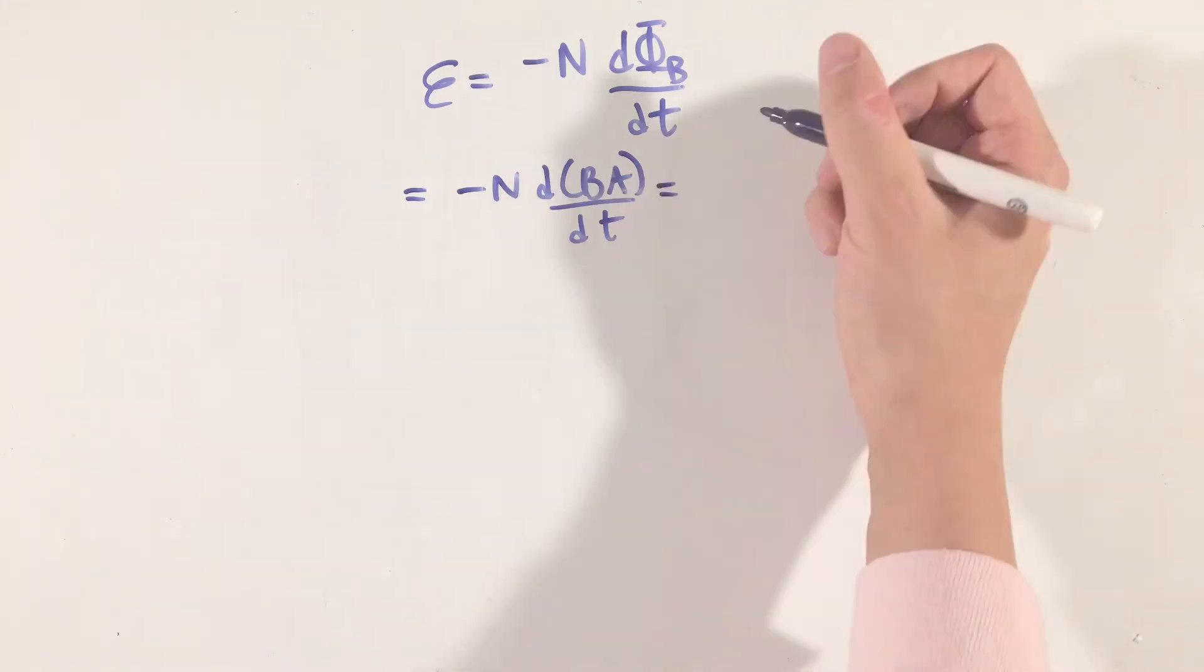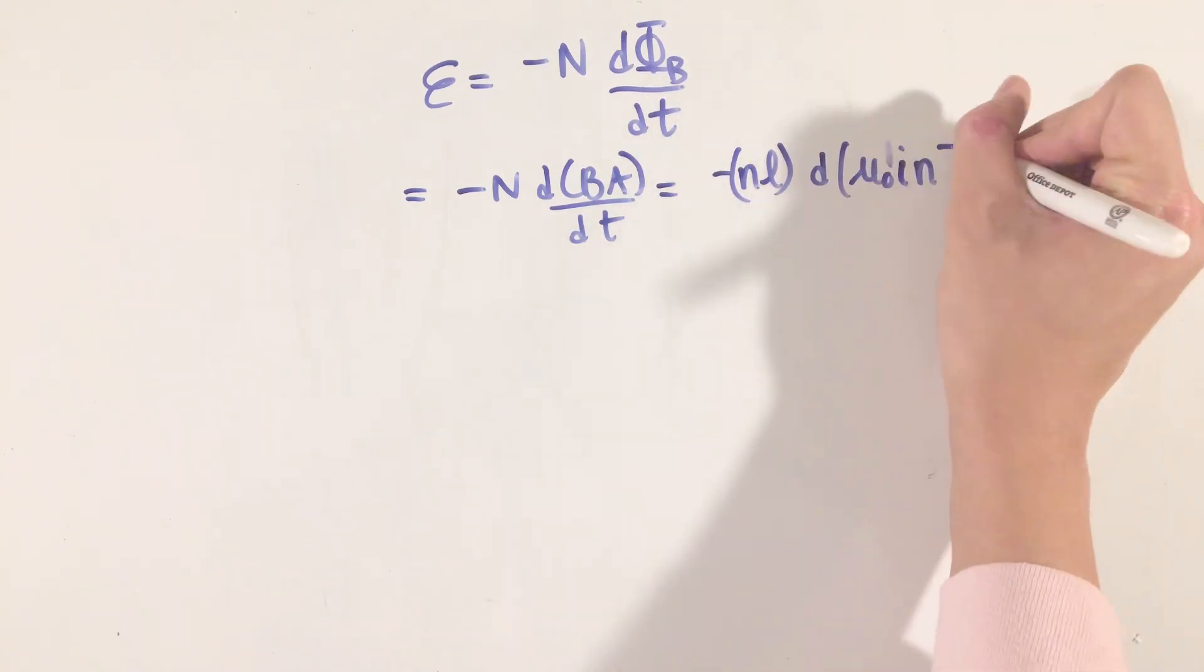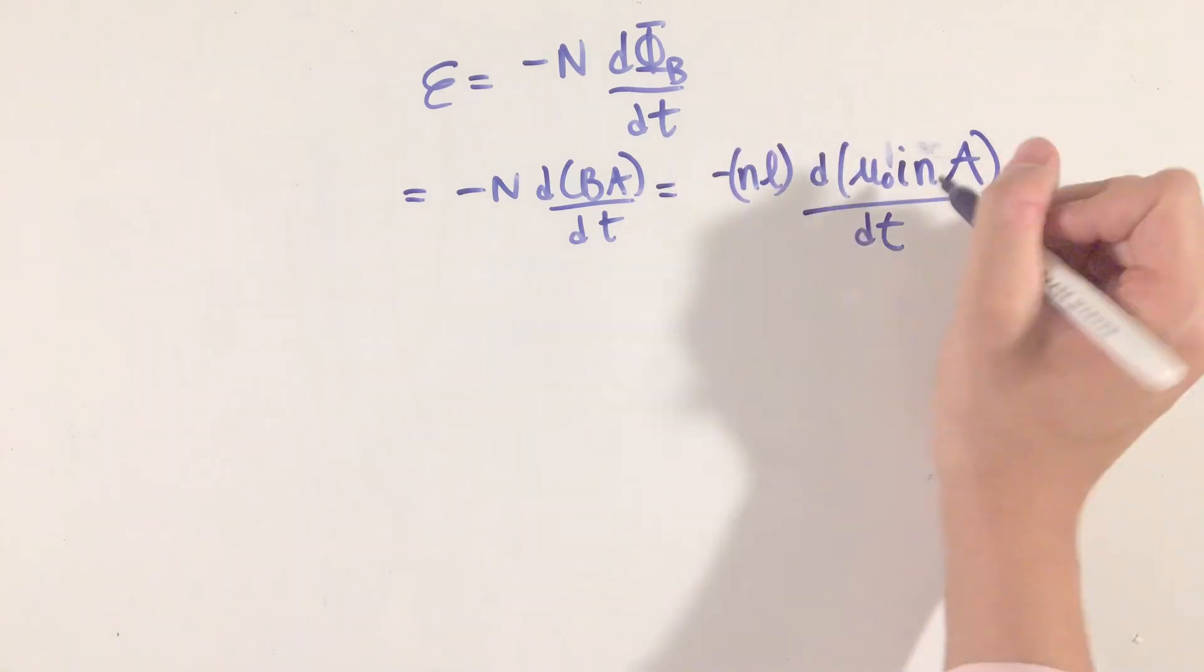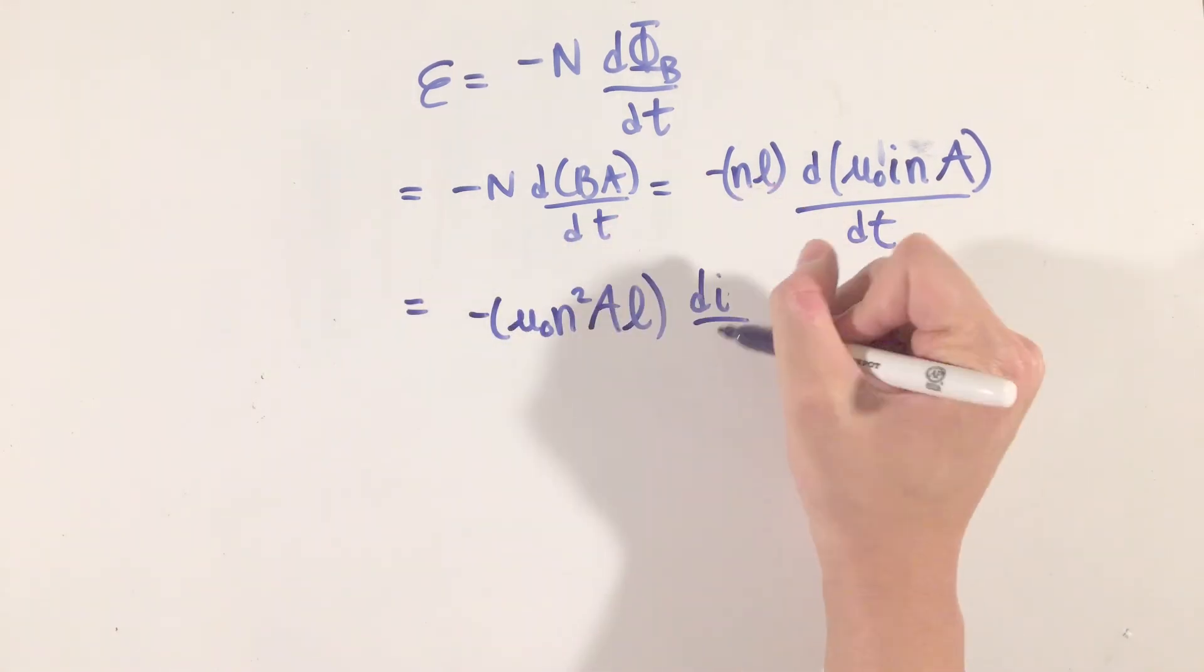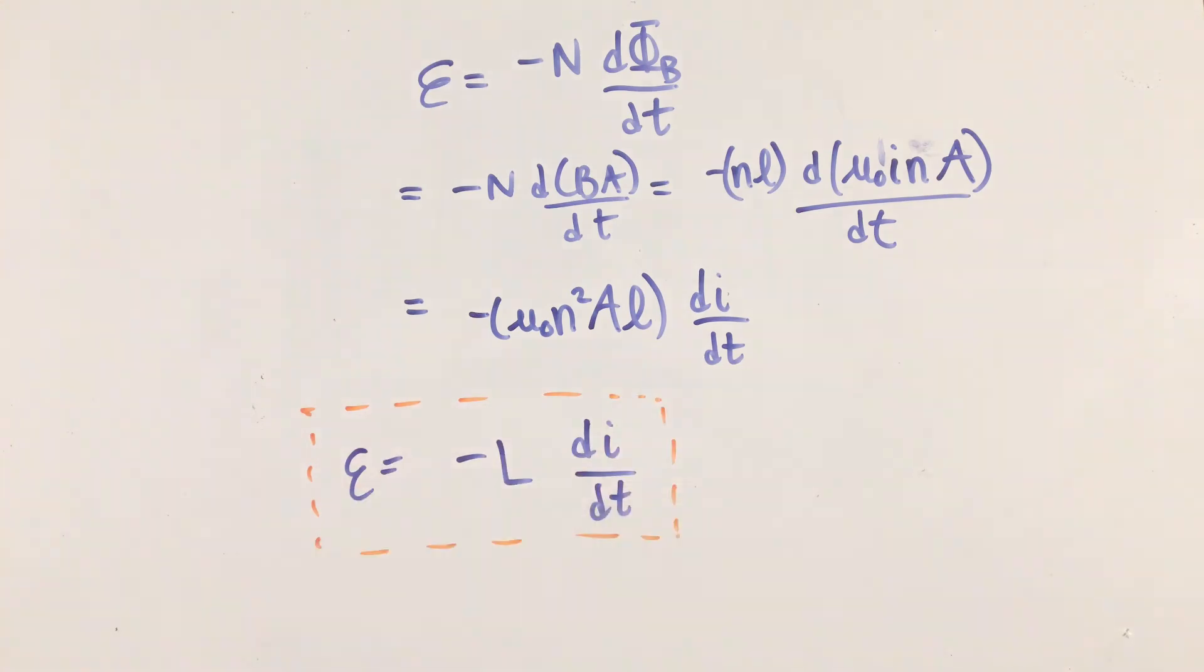The equation that we get is that the EMF across an inductor is equal to the negative of the inductance times the rate of change of current. Essentially, this will act as the Ohm's law of inductors, as we can use this EMF equation in Kirchhoff's loop rules in circuits.